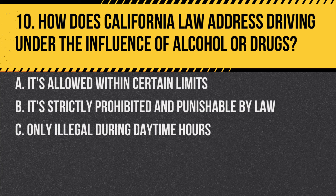Question 10. How does California law address driving under the influence of alcohol or drugs? A. It's allowed within certain limits. B. It's strictly prohibited and punishable by law. C. Only illegal during daytime hours. Answer: B. It's strictly prohibited and punishable by law. Driving under the influence is a serious offense with severe consequences.